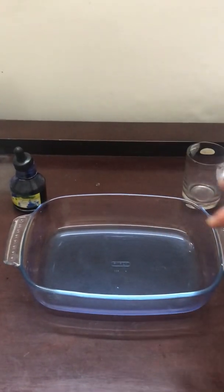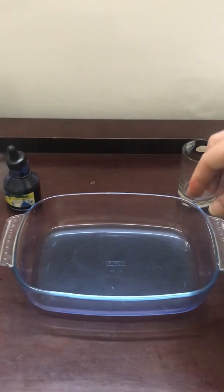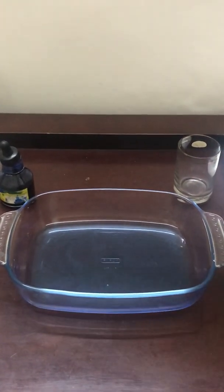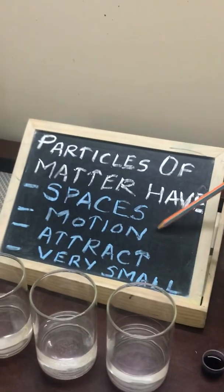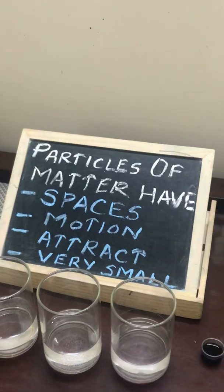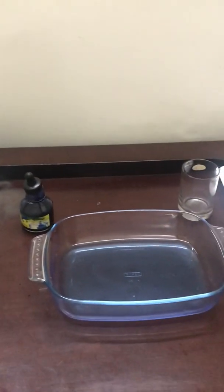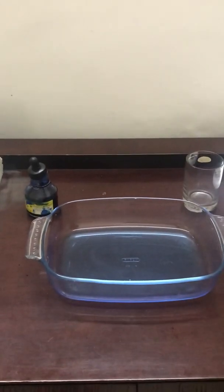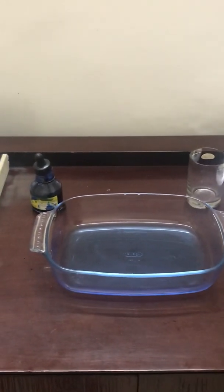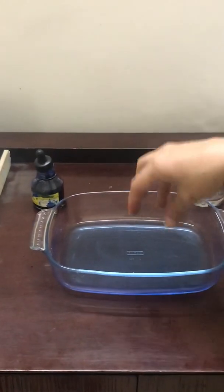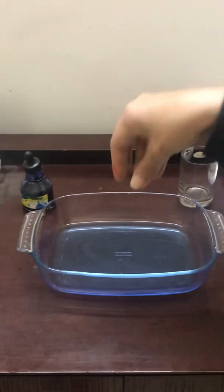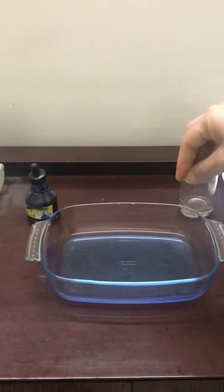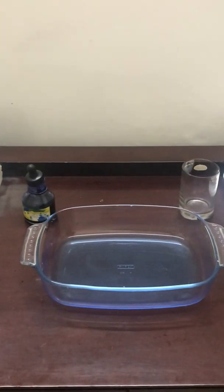This shows us, first, that water particles have spaces — that is why the ink spreads all around. Second, particles of matter are in motion — since they are in motion, they are able to move and spread. Third, particles of matter attract each other — because of the force of attraction, the ink particles are combining and staying with the water molecules.